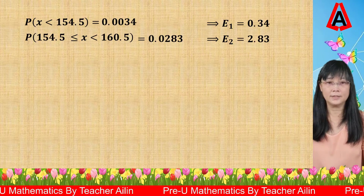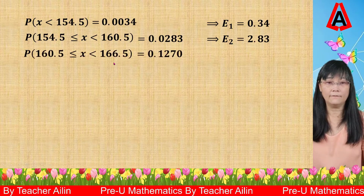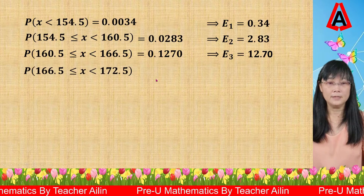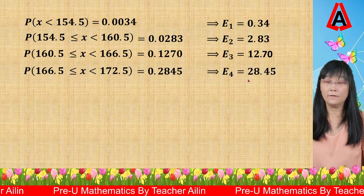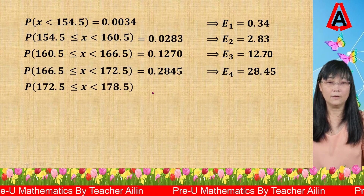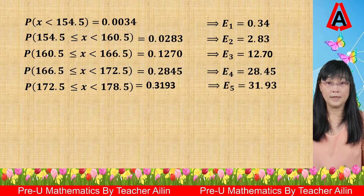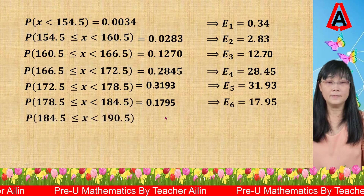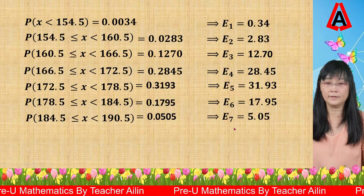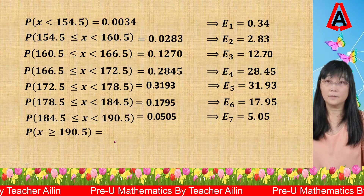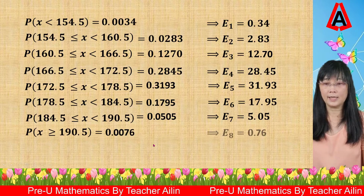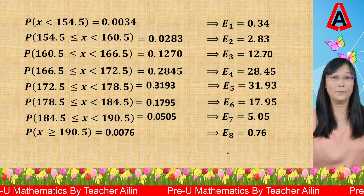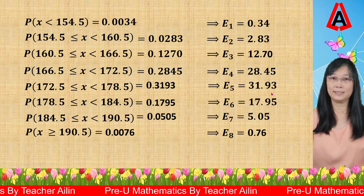Using the same method, we calculate the probability and expected frequency for the third class, fourth class, fifth class, sixth class, seventh class, and finally the last class. After finishing all calculations, we combine everything into a table for easier reference.